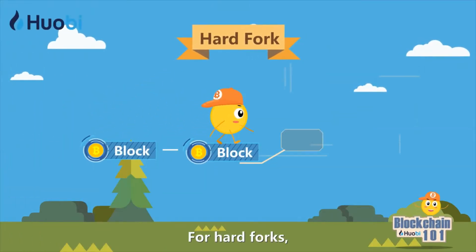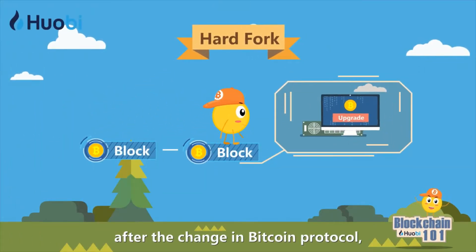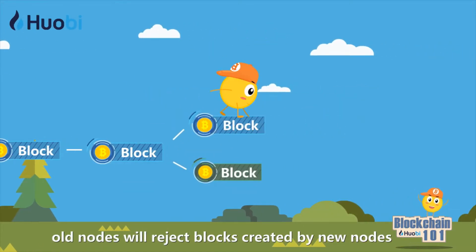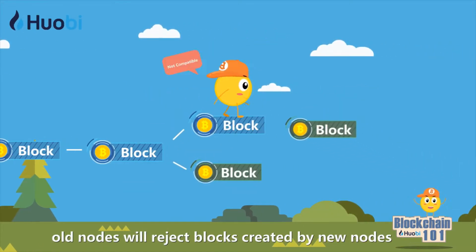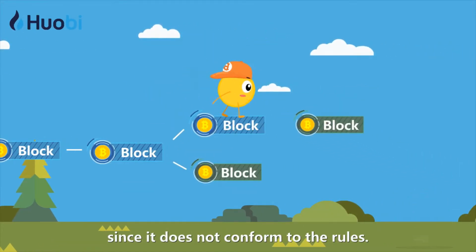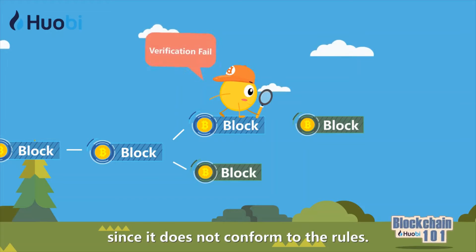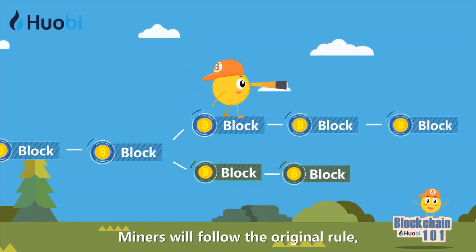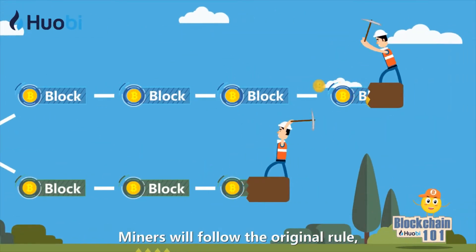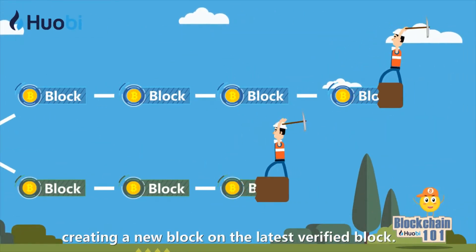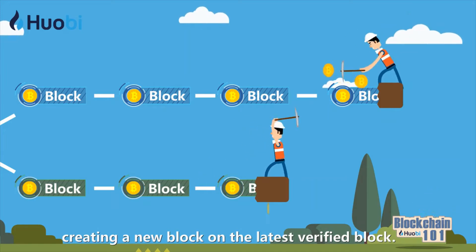For hard forks, after the change in Bitcoin protocol, old nodes will reject blocks created by new nodes since it does not conform to the rules. Miners will follow the original rule, creating a new block on the latest verified block.